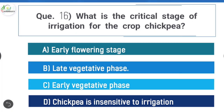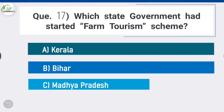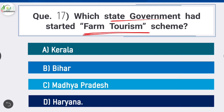Question 17: Which state government has started a farm tourism scheme? Option D is correct: Haryana. The Haryana government has started a farm tourism scheme to boost the tourism sector. Registered farm owners can host tourists as part of holiday packages. This scheme has been started to attract people to villages.